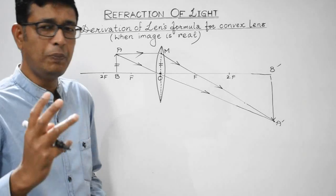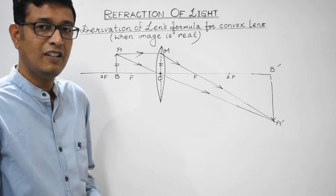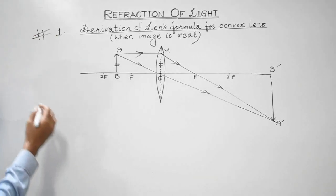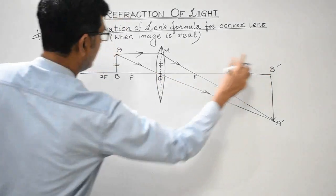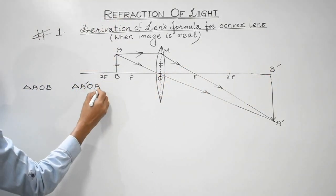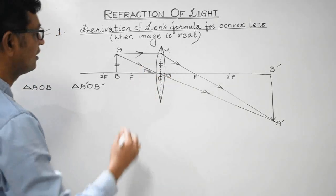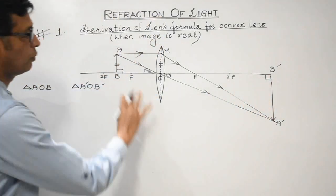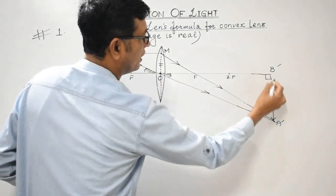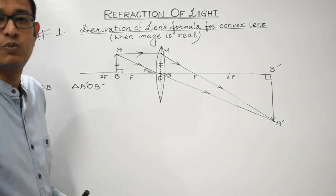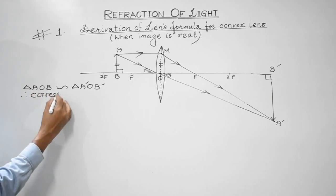We need to consider two pairs of triangles. Consider triangle AOB and triangle A'OB'. This angle is equal to this angle — these are vertically opposite angles. This is 90 degrees and this is also 90 degrees. So by AA corollary, these two triangles are similar. Triangle AOB is similar to triangle A'OB'. These two triangles being similar, their corresponding sides must be proportional.